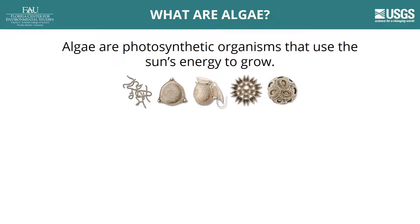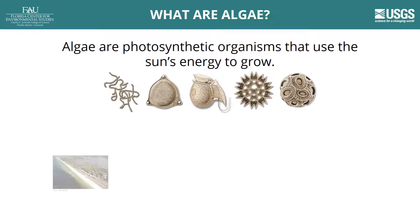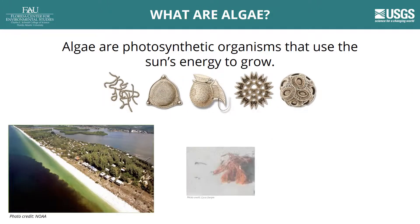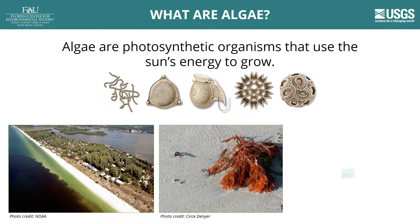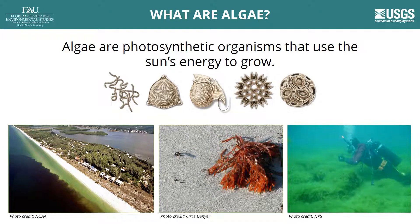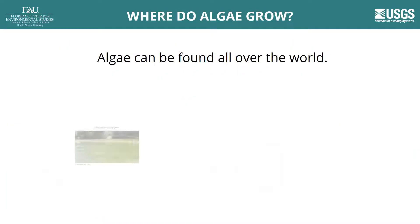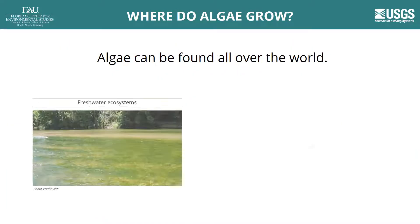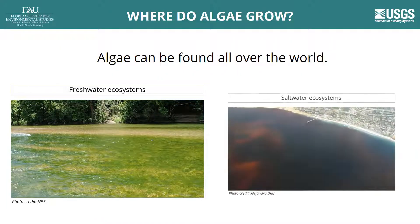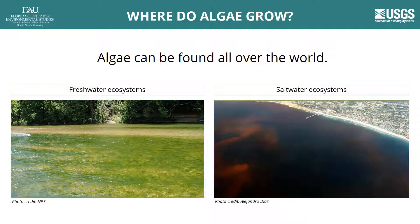Algae are a large and diverse group of organisms that use the sun's energy to grow through photosynthesis. Just like plants, algae differ in size, shape, and color. Algae can be found all over the world, both on land and in the water. Aquatic algae live in freshwater environments like lakes and rivers and saltwater environments including estuaries and the ocean.